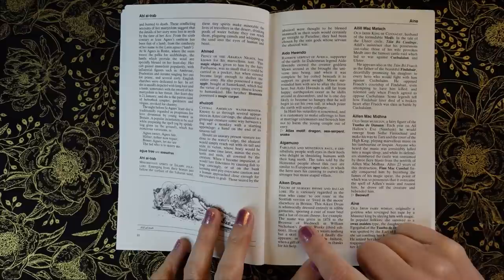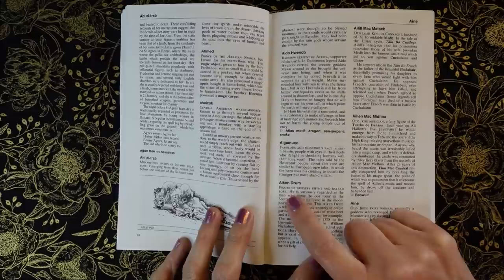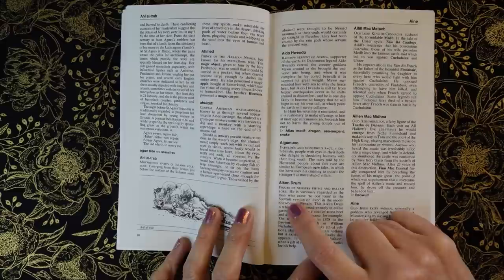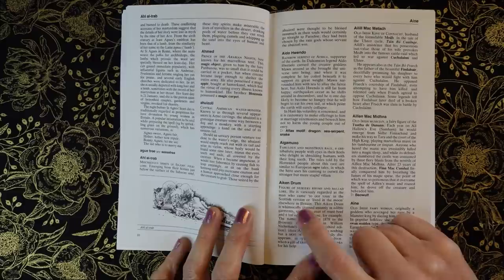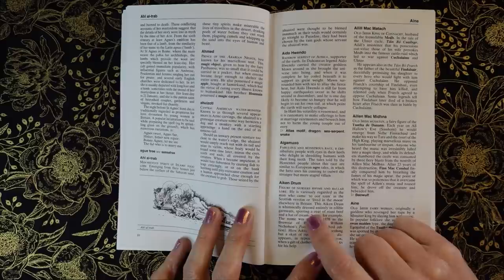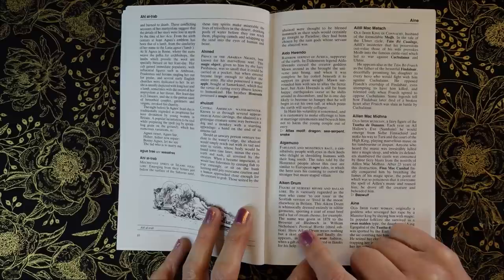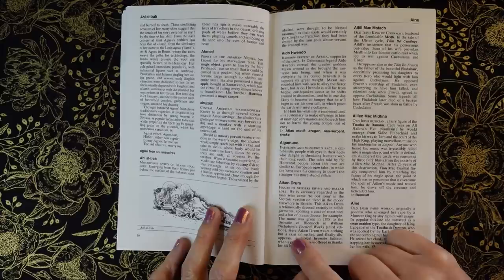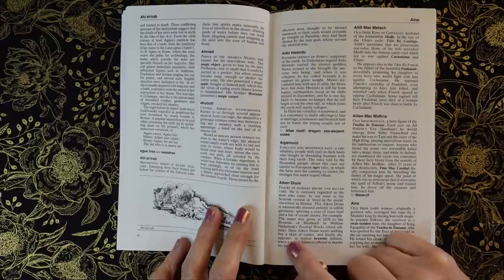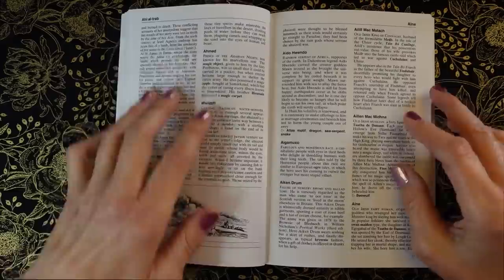Aiken Drum, figure of nursery rhyme and ballad lore, he is variously regarded as the man who came to our town in the Scottish version or lived in the moon elsewhere in Britain. The Aiken Drum is whimsically dressed entirely in edible garments, sporting a coat of roast beef and a hat of cream cheese for example. The name was given in 1878 to the brownie of Bladnock in William Nicholson's Poetical Works third edition. Here Aiken Drum wears nothing but a skirt of rushes and finally disappears in typical brownie fashion when a gift of clothes is offered in thanks for his help.